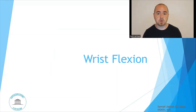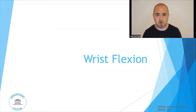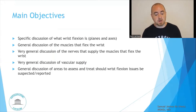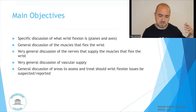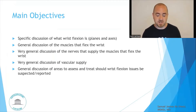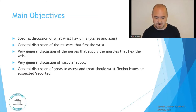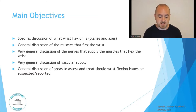Continuing along, looking at anatomy with respect to motion — making motion the central part of our semantic network — we're looking at wrist flexion. Our main objectives include specific discussion of what wrist flexion is, the planes and axes, a general discussion of the muscles that flex the wrist, the nerves that supply those muscles, the vascular supply, and the areas to assess and treat should wrist flexion issues be suspected.